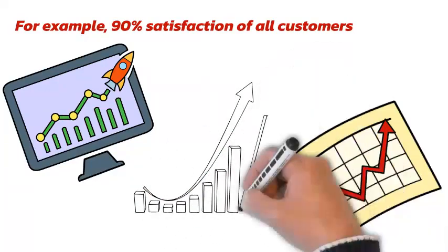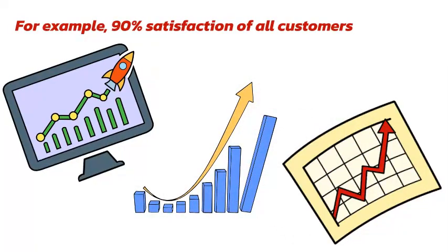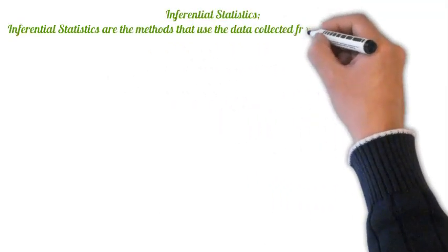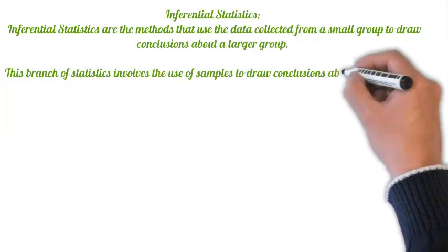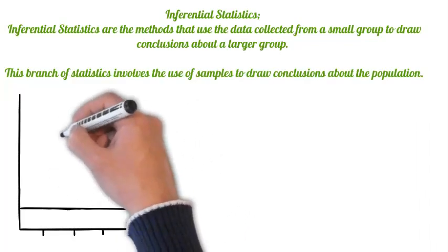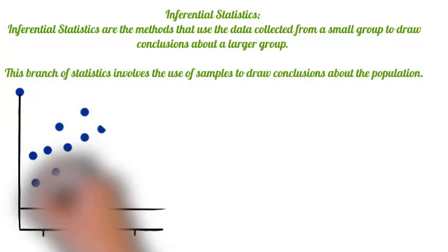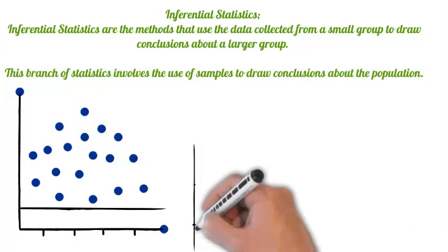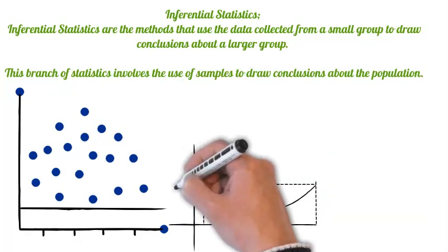So the second type of statistics is inferential statistics. Inferential statistics are the methods that use the data collected from a small group to draw conclusions about a larger group.